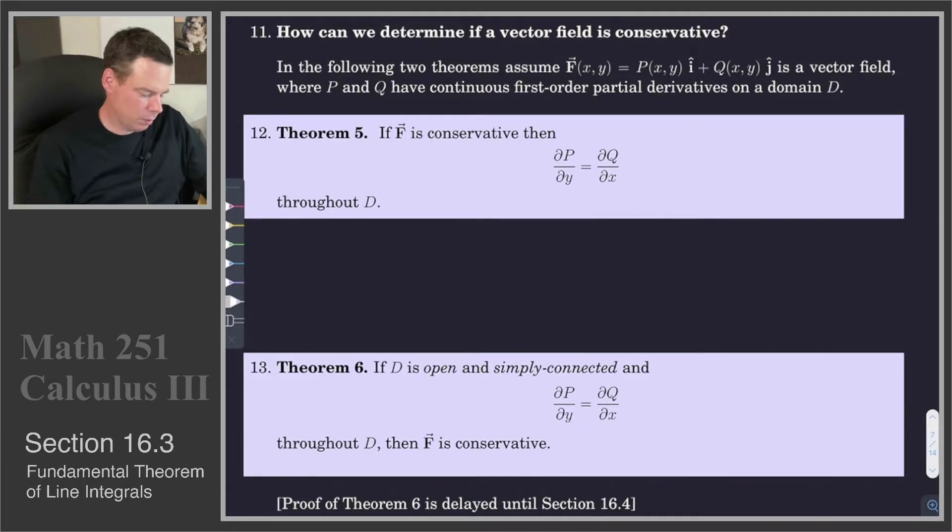So the first theorem, Theorem 5, says that if F is conservative then the partial of P with respect to y is equal to the partial of Q with respect to x. Why would this be the case?